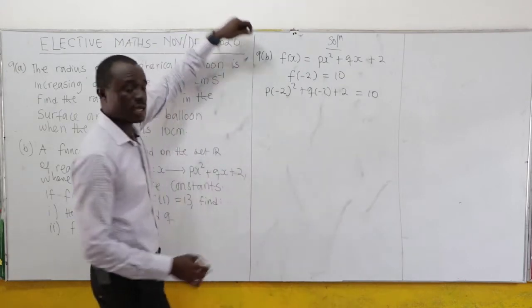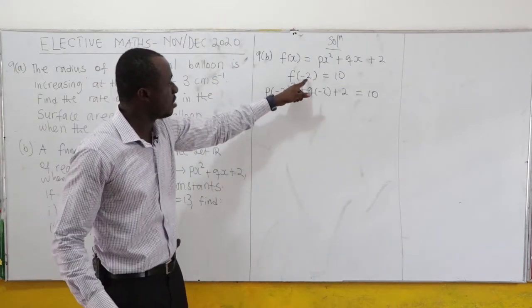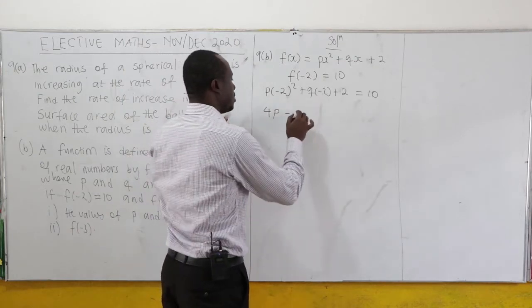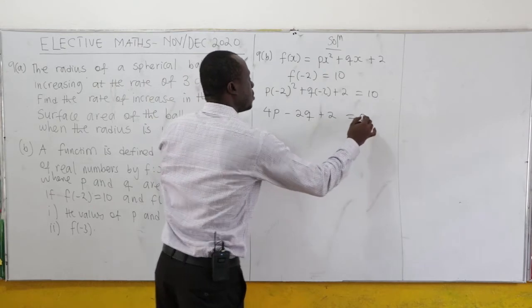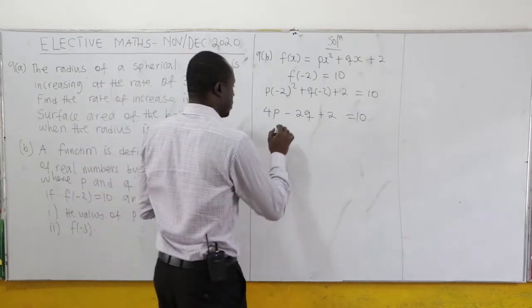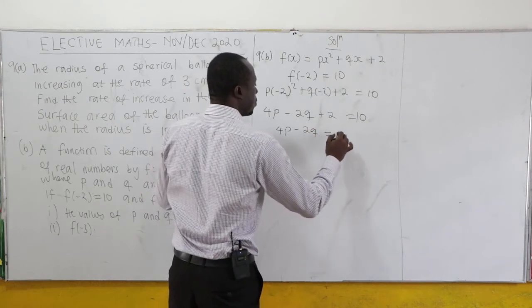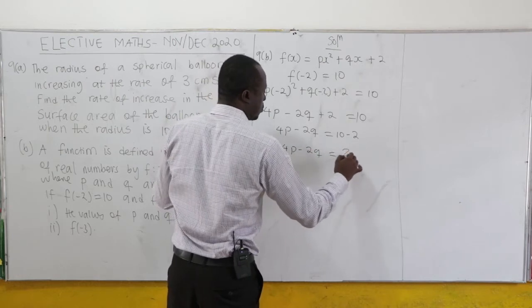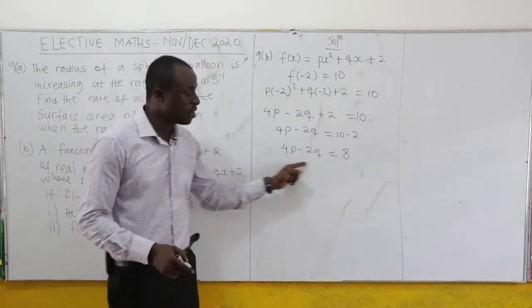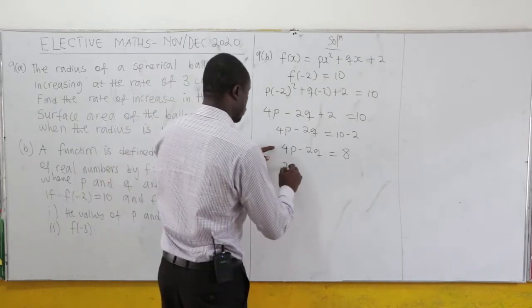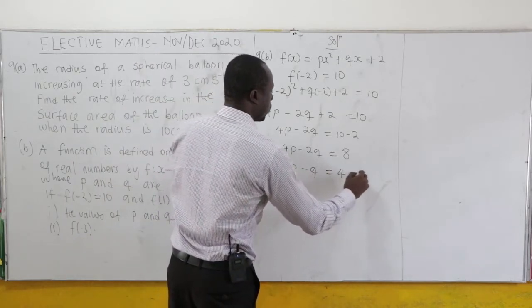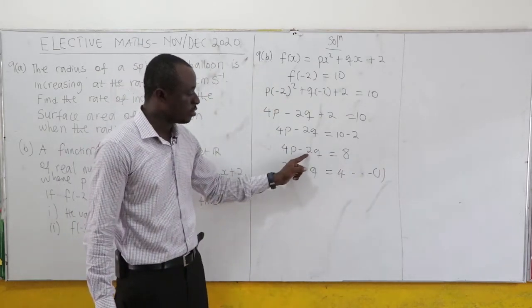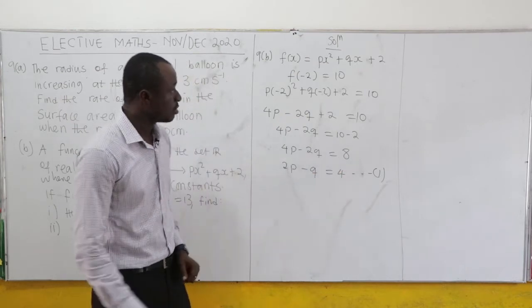This gives us 4p - 2q + 2 = 10, so 4p - 2q = 8. Dividing through by 2, we get 2p - q = 4. That's equation 1.